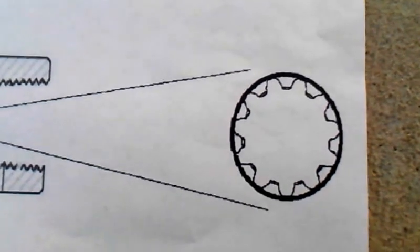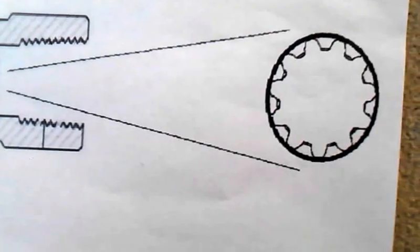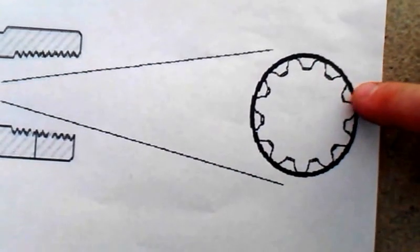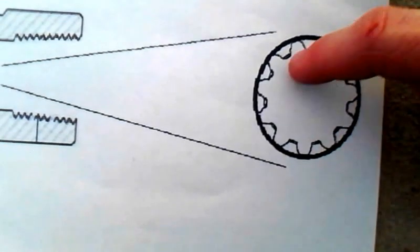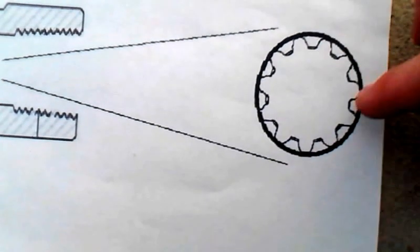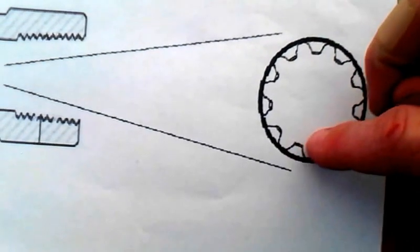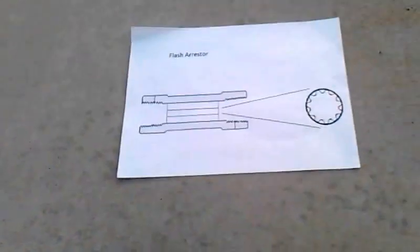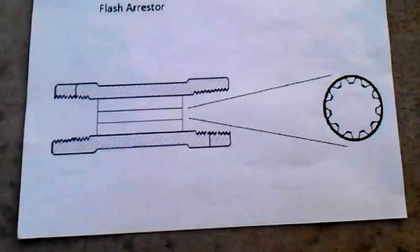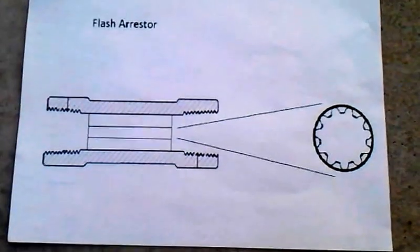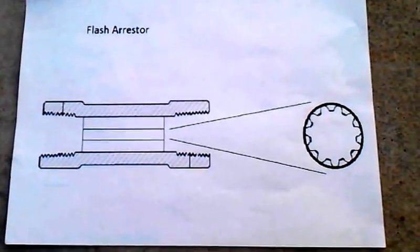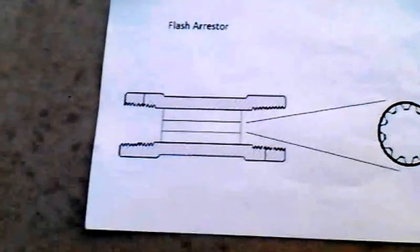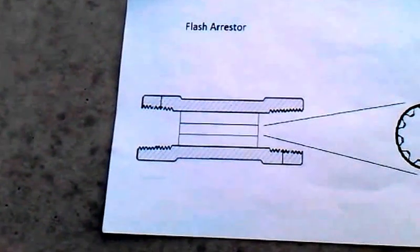And then what you could do is you could actually light a flame directly on top of this, and you'd have a flame come out of each of these little valleys right here, the saddles, between each spline. So you could make a cooking stove out of this or whatever. But the main purpose of this is to be used as a flash arrestor for hydrogen units or natural gas, propane, whatever you want.